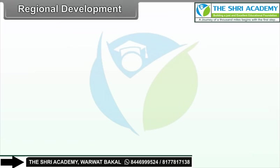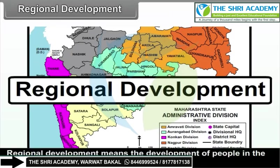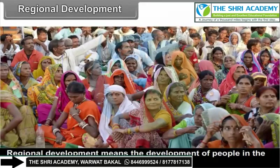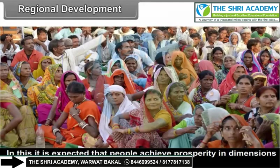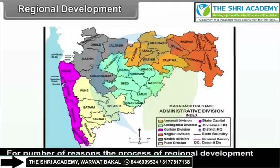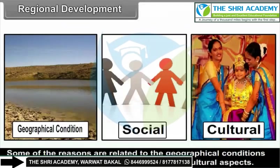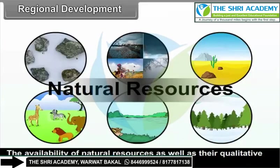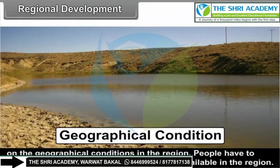8.2 Regional Development. Regional Development means the development of people in the region. In this, it is expected that people achieve prosperity in dimensions such as economic, social, cultural, etc. For a number of reasons, the process of regional development becomes quite complex. Some of the reasons are related to geographical conditions, while others are associated with social and cultural aspects. The availability of natural resources, as well as their qualitative and quantitative levels, largely depend on the geographical conditions in the region.